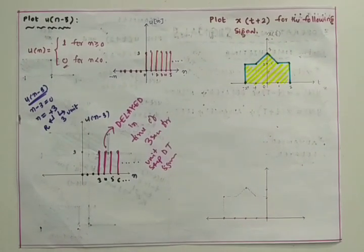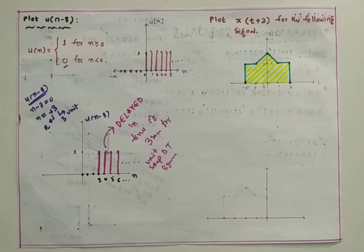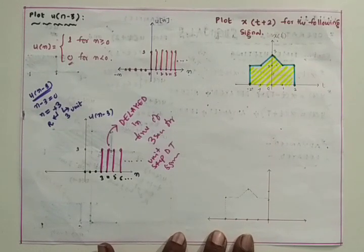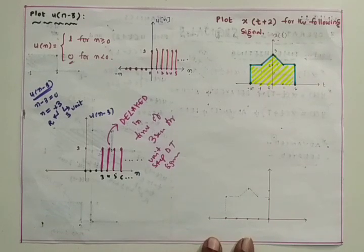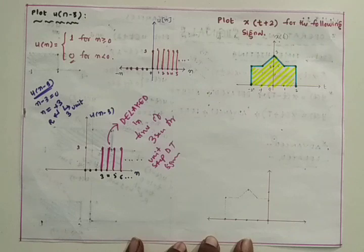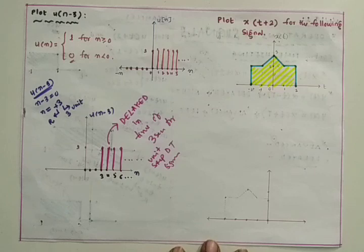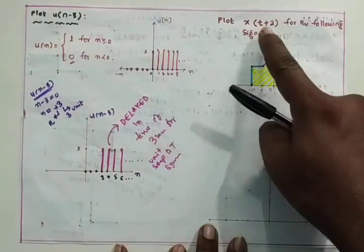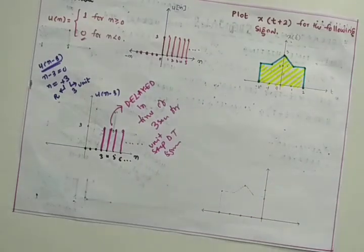I am going to discuss one more example to close this session, after which the time shifting operation topic will be complete. From this topic, students can expect one short answer and one long answer question in the exam. The question is: plot x(t + 2) for the following given signal.